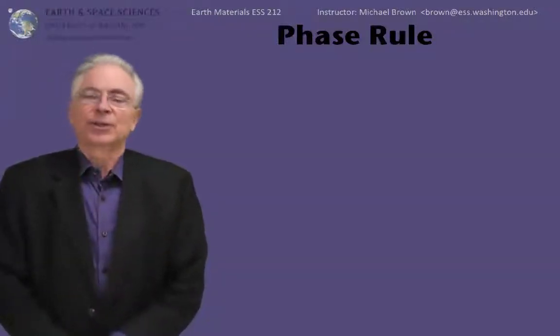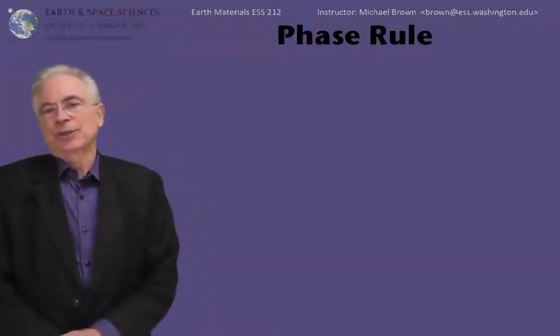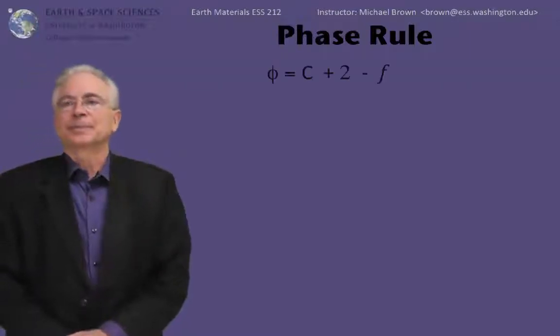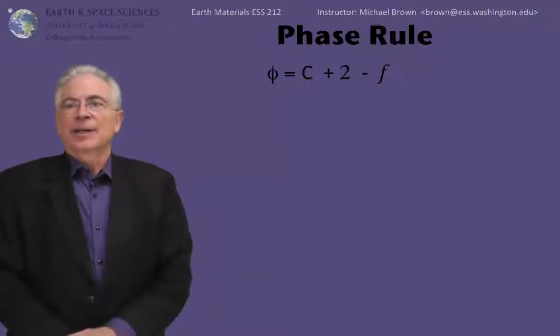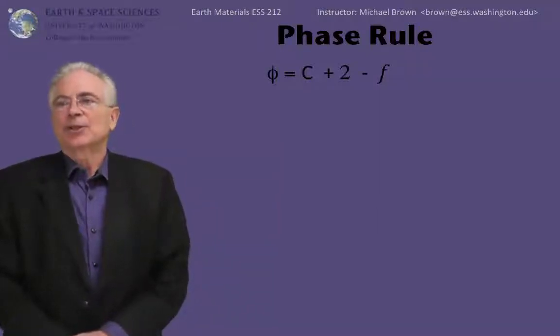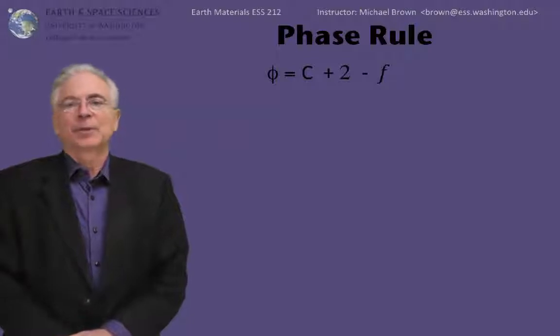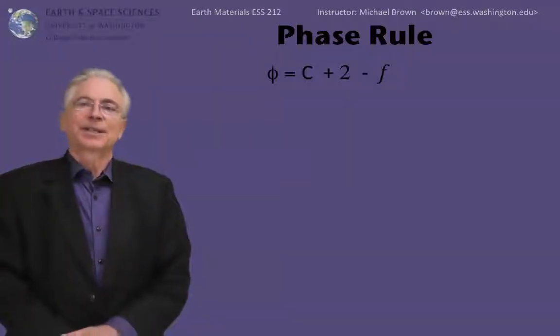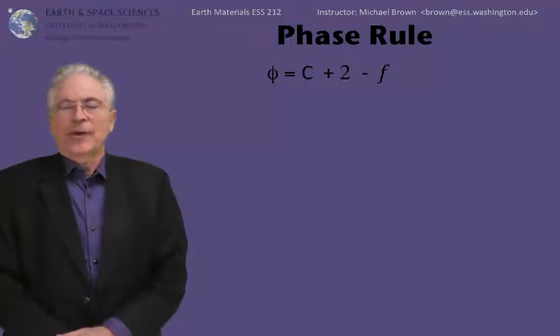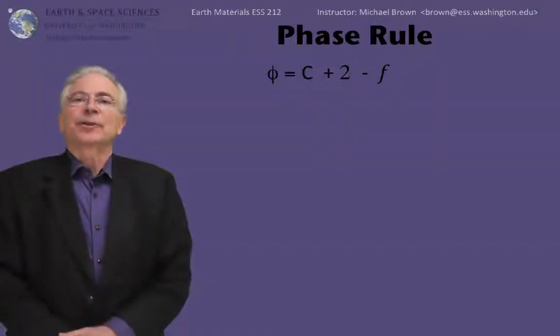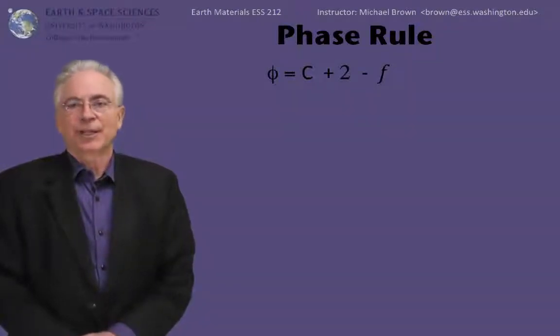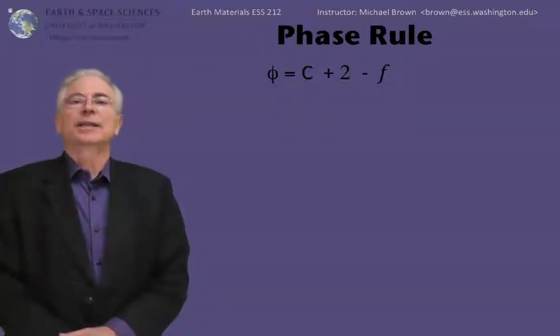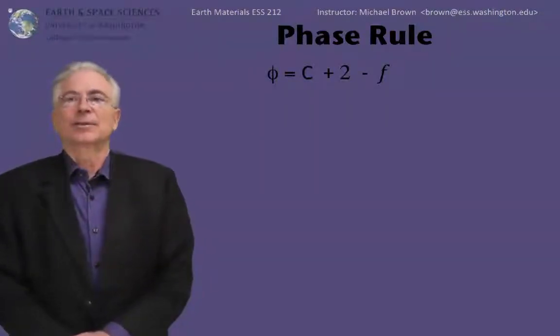That moves us now into the important concept for this video, which is the phase rule. I'll write down the phase rule. It's Greek letter phi equals C plus 2 minus F. All the symbols are integer quantities. This equation is derivable from the equation for Gibbs energy in terms of chemical potentials and pressure temperature effects. We're not going to do that derivation, but we're going to use the result as codified in this equation.